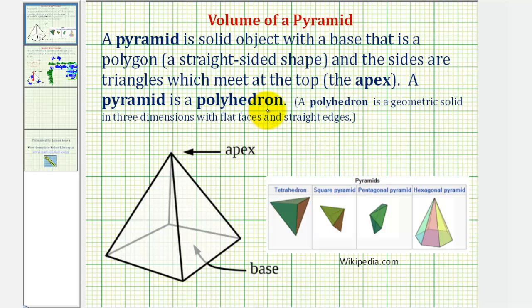However, not all polyhedrons are pyramids. For example, a cube or rectangular prism satisfies the conditions for a polyhedron but is not a pyramid because it does not have triangular sides that meet at the top, called the apex.